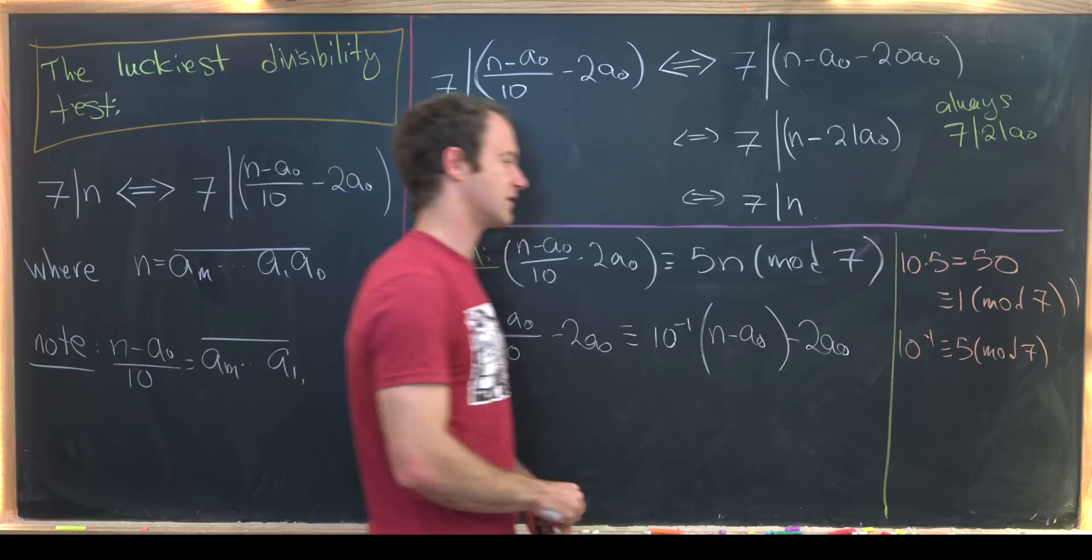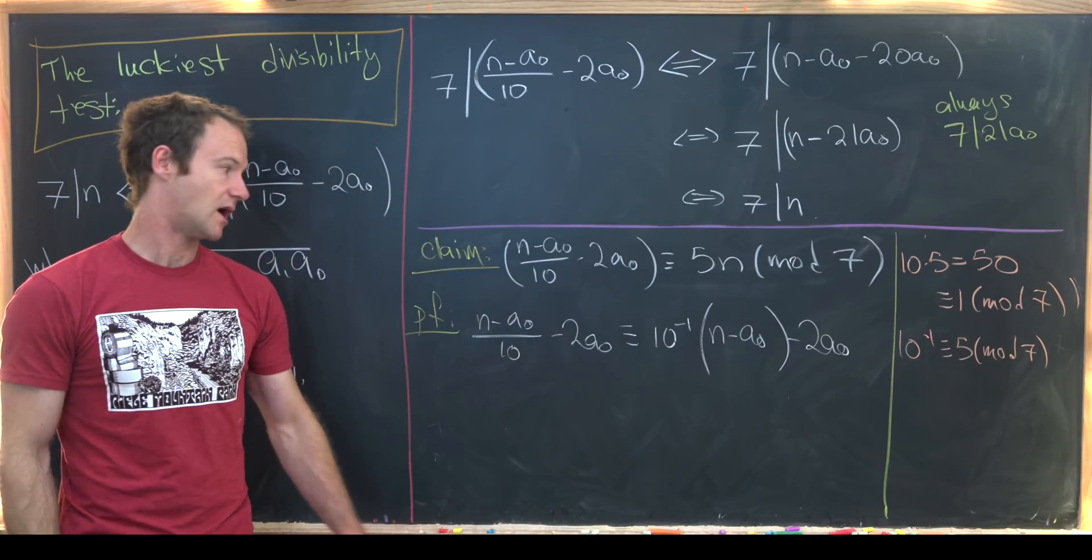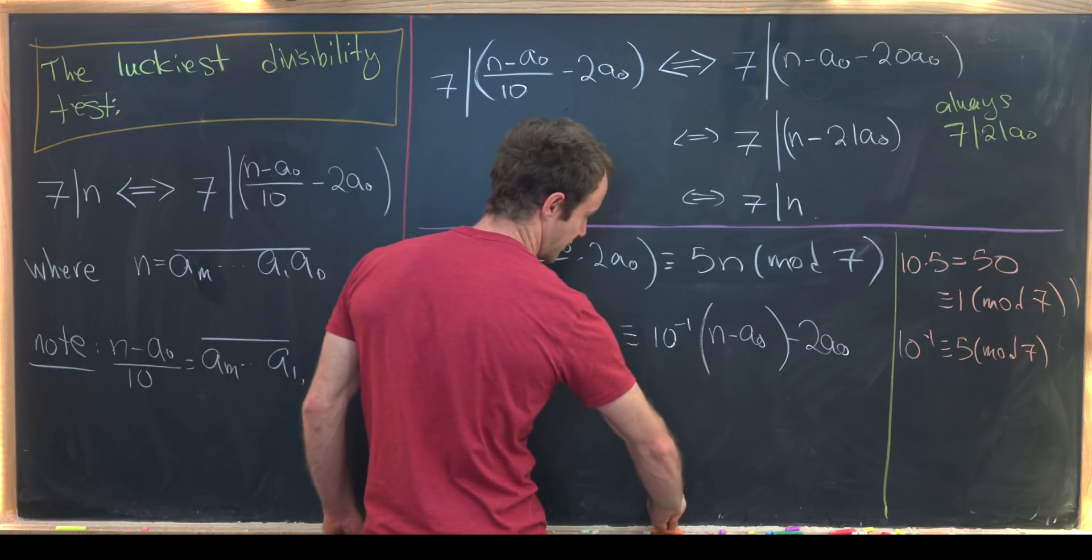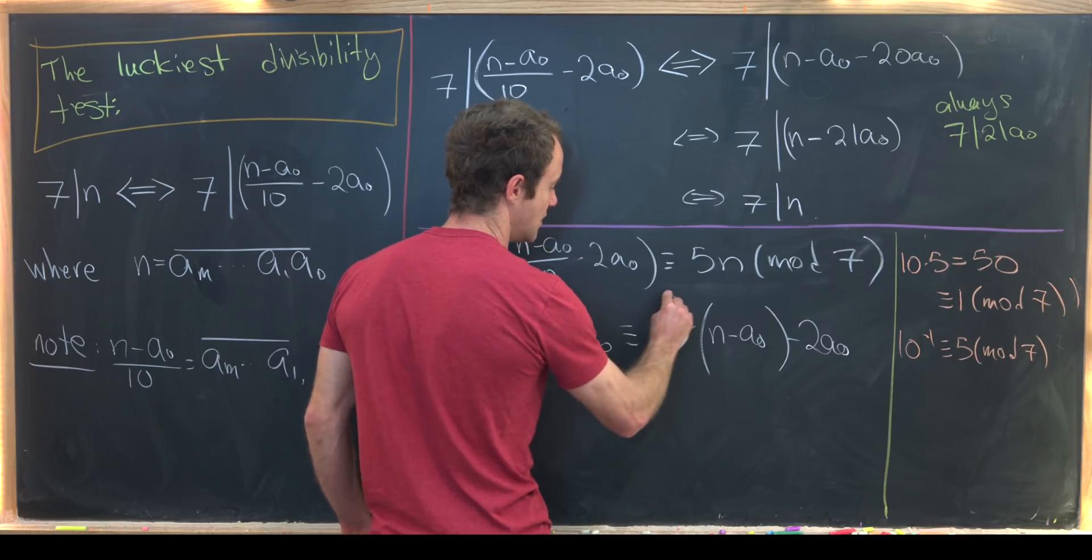So that means that 10 inverse is congruent to 5 mod 7. And we have the modular inverse of 10 mod 7 and that is 5. So that means we can replace this 10 inverse here with 5.